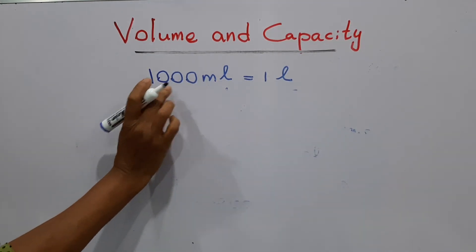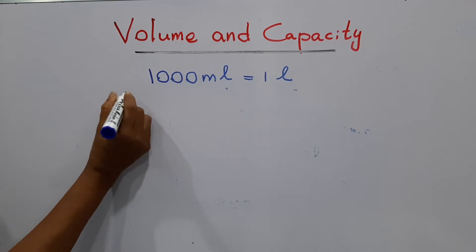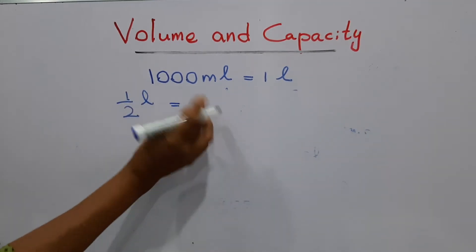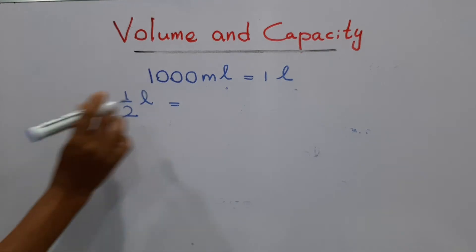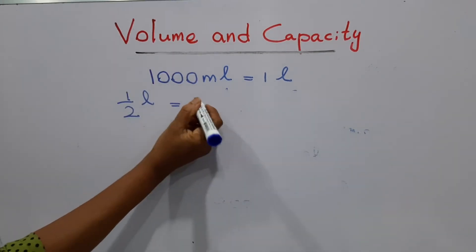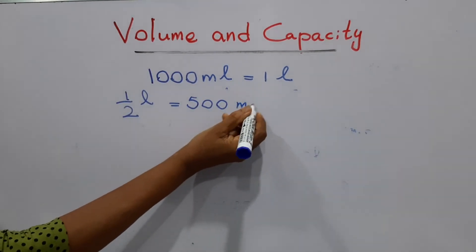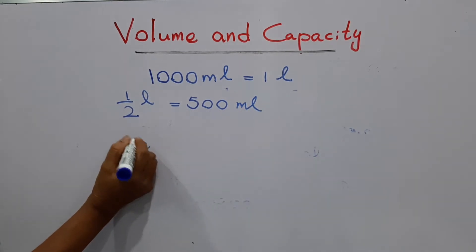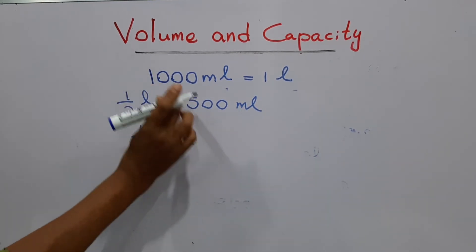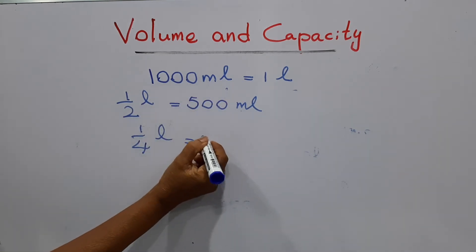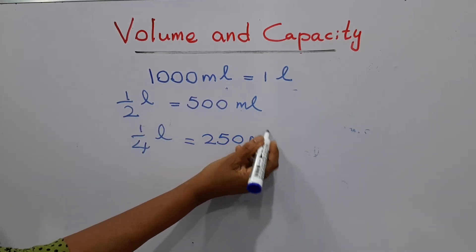One liter equals one thousand milliliters. My question is: half of a liter — how many milliliters are there in half of a liter? Half of a liter means two hundred and fifty milliliters.